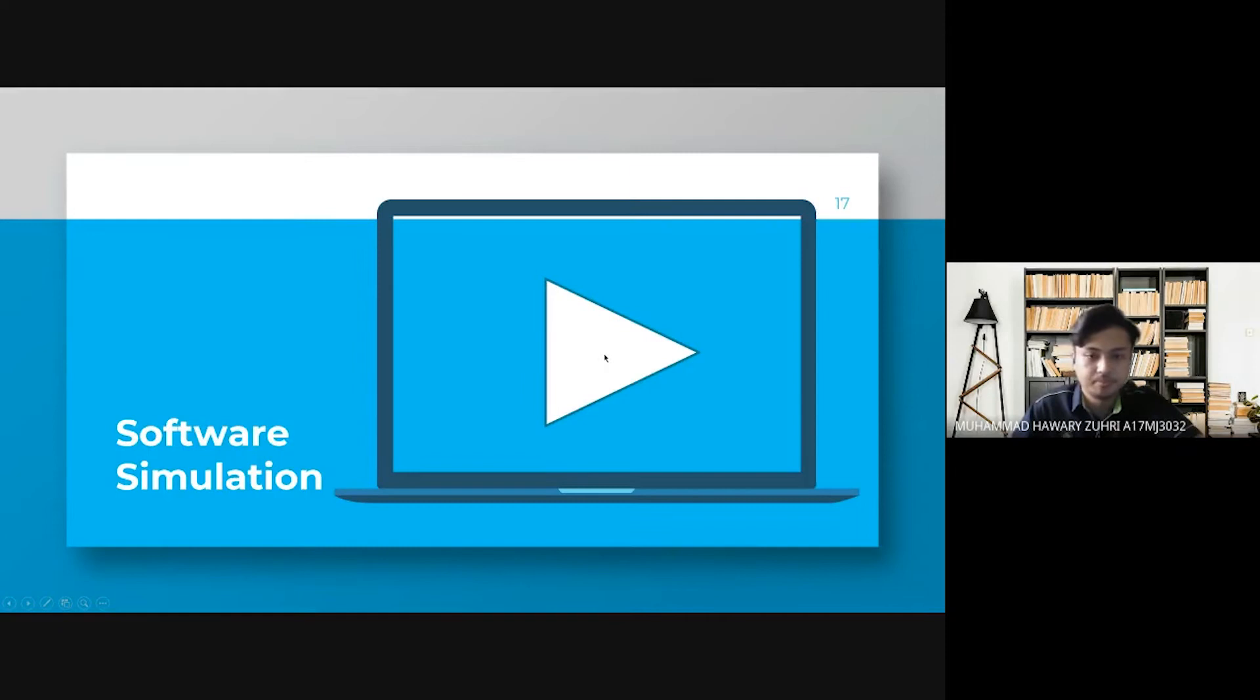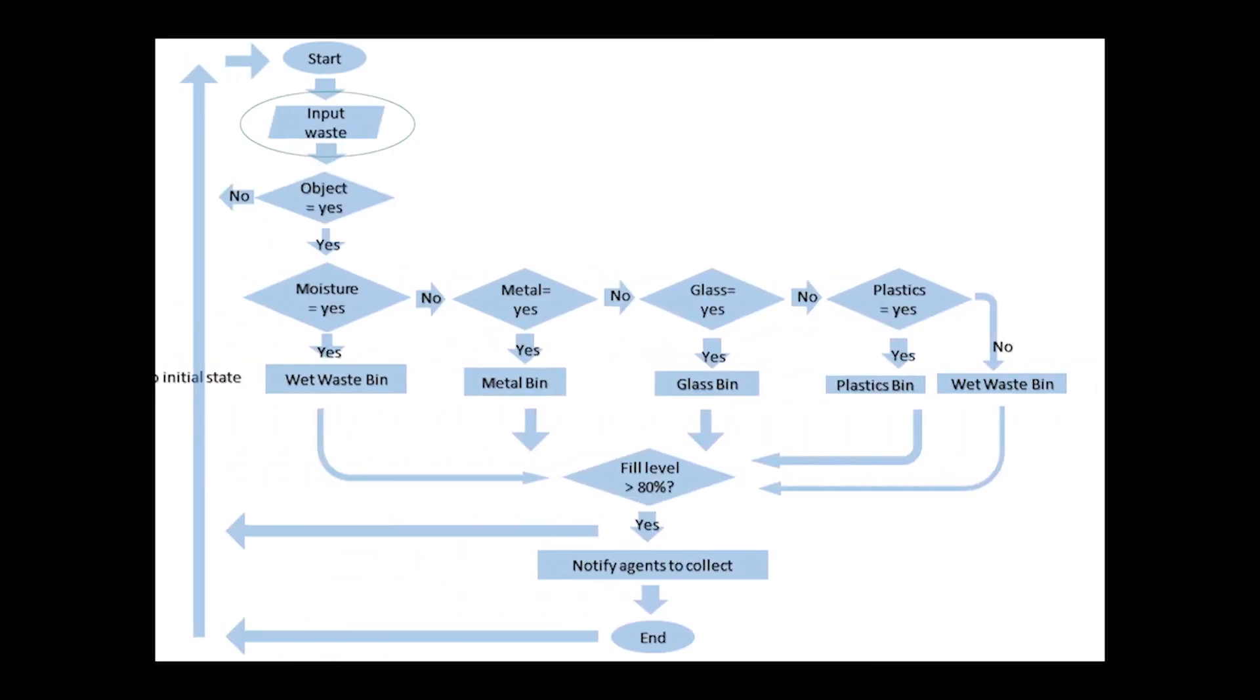For software simulation, this is the flowchart of the project. It starts from inputting the waste. Only when an object is sensed, it will proceed to activate the sensors. If not, it will return back to initial state.